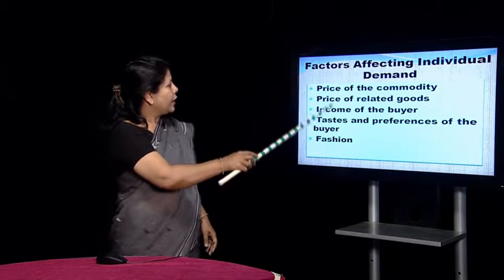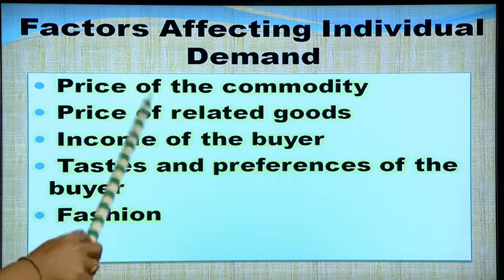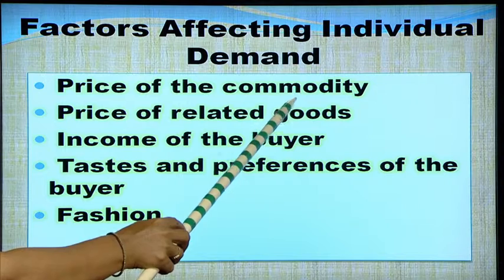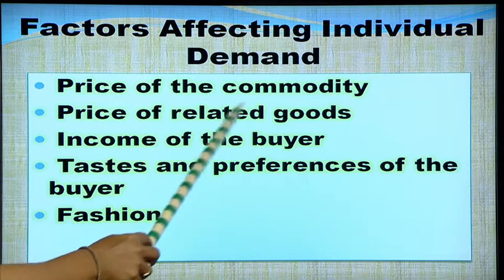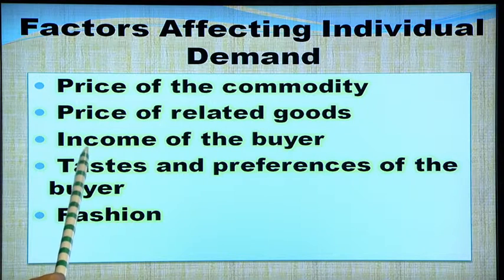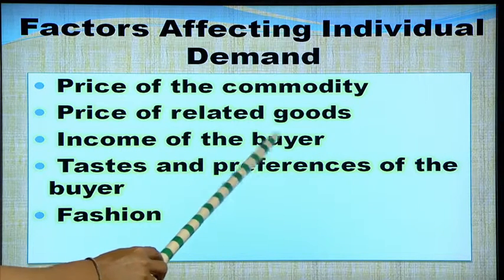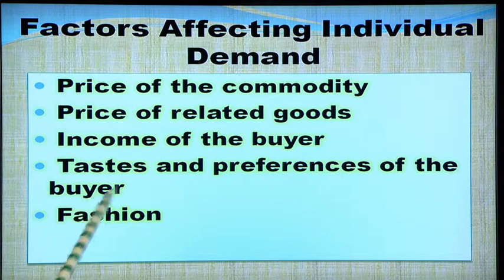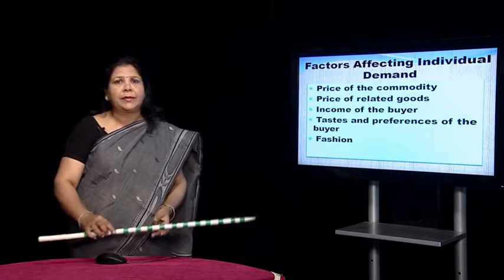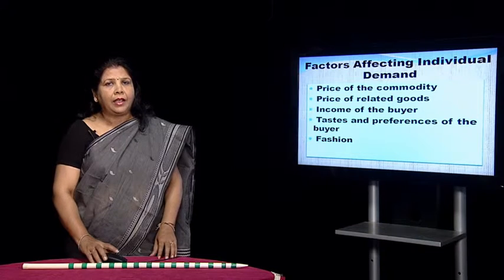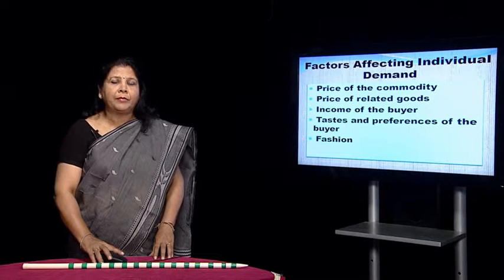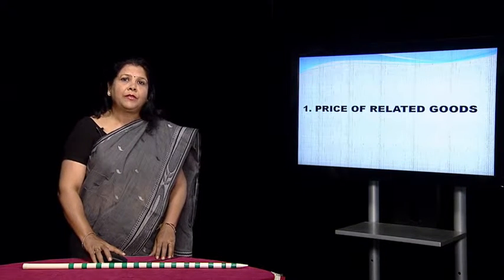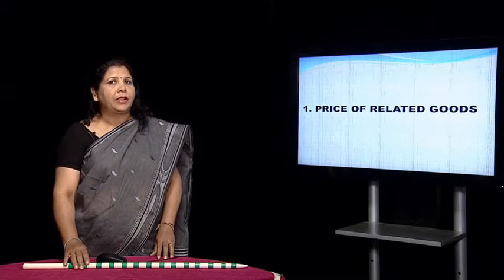The factors which constitute demand for a commodity are, firstly, price of the commodity; secondly, the price of related goods; thirdly, the income of the buyer; and fourthly, tastes and preferences of the buyer — and we include fashion in it as well. Let us now understand each of these factors that affect demand one by one.